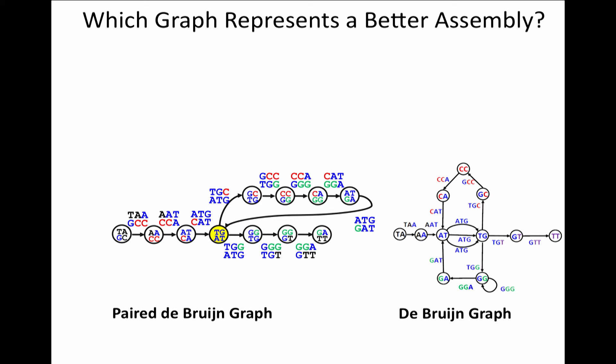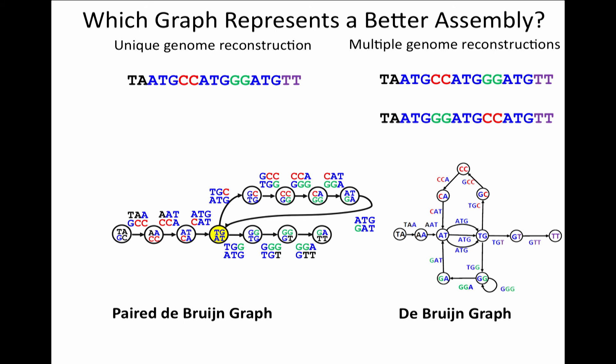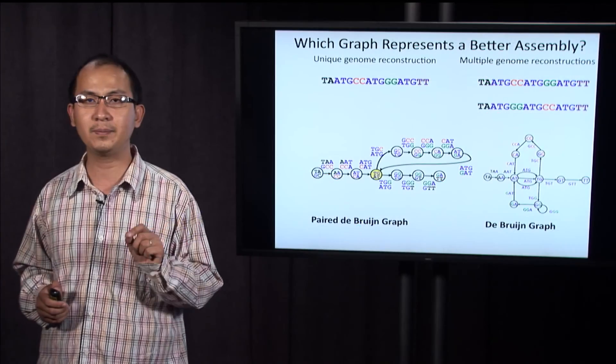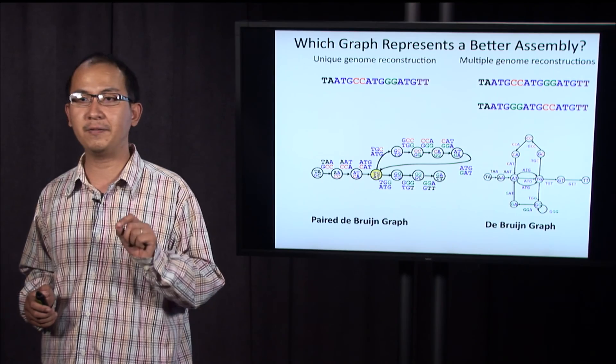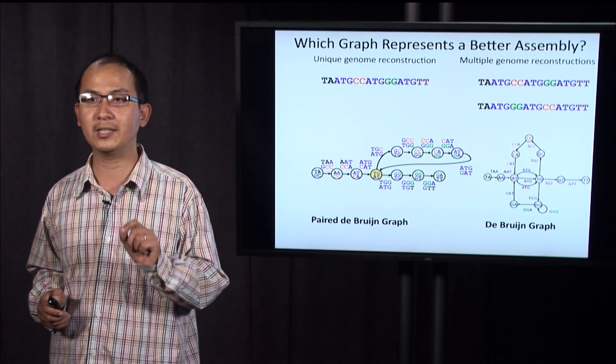Indeed, there's only one Eulerian path in the paired de Bruijn graph that allows us to uniquely construct the genome. While the de Bruijn graph, we cannot construct the genome uniquely. In practice, paired de Bruijn graph has been applied in assemblers, and it has shown a significant advantage in the resulting assembly.